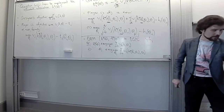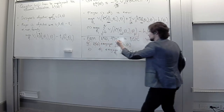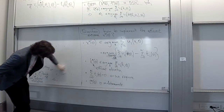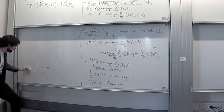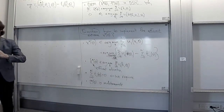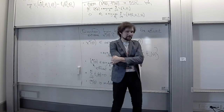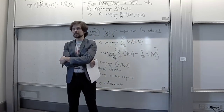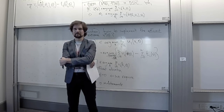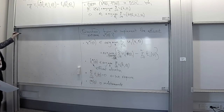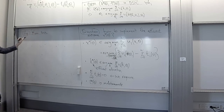Our claim is that we now have transfers to implement the efficient allocation and we should be happy. But let us consider an example which will illustrate that even if we are happy, we should not be. Consider the following simple public project example: Denmark decides whether to build a moon base, and it conducts a referendum where each citizen can state their evaluation for the moon base. If it is efficient to build the moon base, it is built.